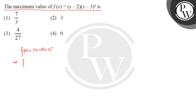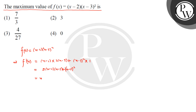We'll find the derivative because we need to find the maximum value of this function. Using the product rule: first function times derivative of second function, plus second function times derivative of first function. The derivative of (x - 2) is 1, giving us 2(x - 2)(x - 3) plus (x - 3)².